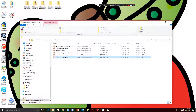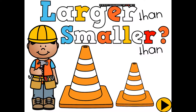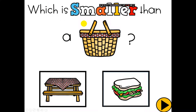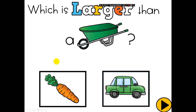The next game is 'Larger or Smaller.' This one shows students objects they have to think about in the real world — for example, which is smaller than a basket? The objects in the box may be relatively the same size on screen, so students have to think about real-life scale. If they choose incorrectly they get a reinforcing error sign.